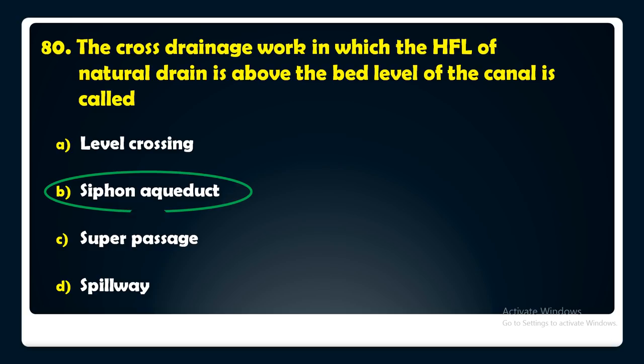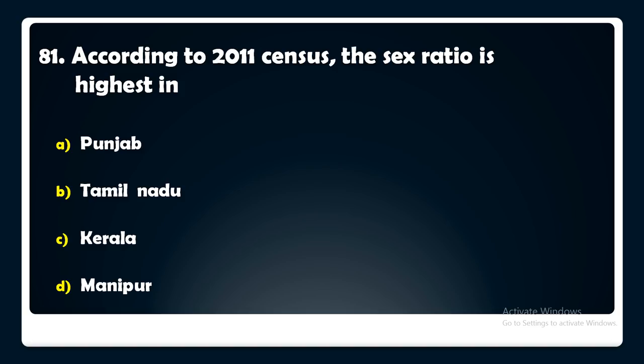According to the 2011 census, the sex ratio is highest in — Punjab, Tamil Nadu, Kerala, or Manipur? The answer is: according to the 2011 census, the sex ratio is highest in Kerala.